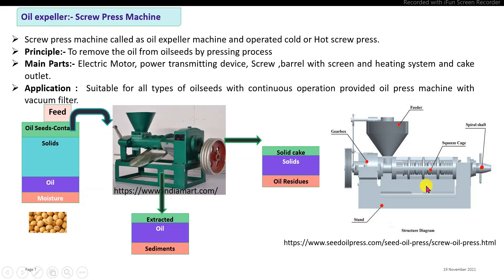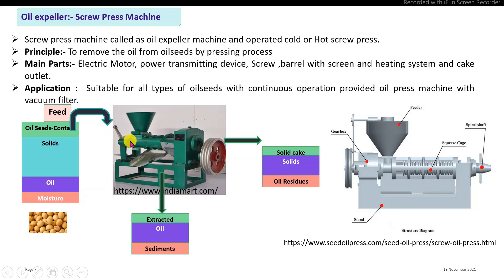The basic principle of the oil expeller machine is that the oil contained in the oil seeds is removed by the pressing process. In the processing steps, the oil seeds containing solids, oil, and moisture are first pre-processed and continuously fed into the oil expeller machine. Inside, the machine is provided with a rotating screw fitted with a central shaft. Power transmission devices drive the screw within the complete barrel, which may also be provided with a heating system. The seeds are continuously pressed, and due to the pressing, the internal moisture, oils, and dissolved solids come out from the oil.